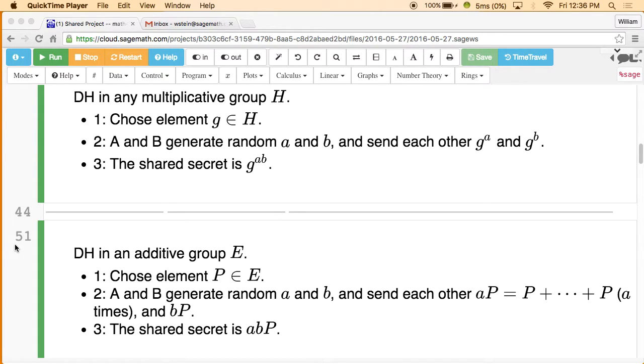But here's how Diffie-Hellman would work in an additive group. You choose a specific choice of element P, you generate random numbers a and b, and send each other aP and bP. By which I mean, you add P to itself a times, and you add P to itself b times. And then everybody sees aP, everybody sees bP. And capital A, capital B, they can compute the shared secret, which is abP. But it's difficult for everybody else to compute that shared secret, because all everybody else knows is P and bP and aP. And it's hard to find, hopefully, b given bP. It depends on the group you're working in, of course.